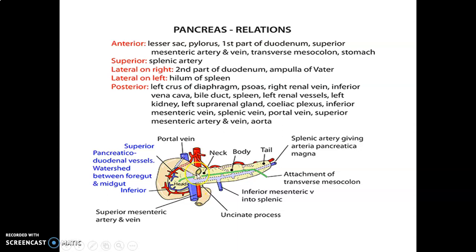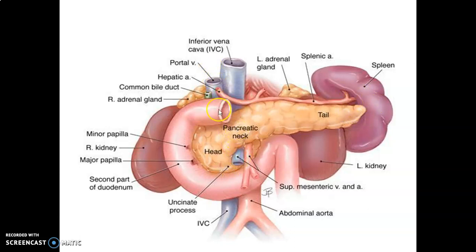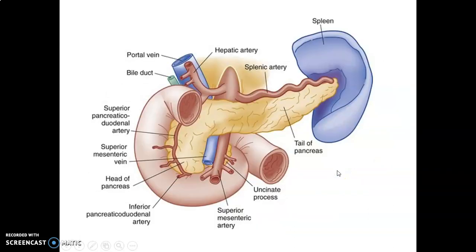Behind the pancreas there is also the aorta, inferior vena cava, and the common bile duct. The superior mesenteric artery and superior mesenteric vein pass posterior to the body of the pancreas but anterior to the uncinate process of the pancreas. You can appreciate that the portal vein and bile ducts are posterior to the pancreas, and the splenic and superior mesenteric veins join posterior to the neck of the pancreas to form the portal vein.